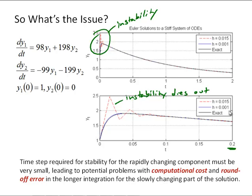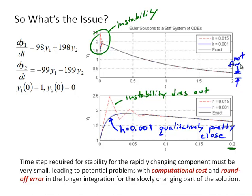I've blown up that graph here going out to t equals 0.2 and you can see that the solution is unstable but the instability dies out. So over time we have a stable solution but Euler's method is not able to resolve that quickly changing component early in the solution. I've also got the time step of 0.001 here and you can see that h equals 0.001 is qualitatively, at least, pretty close.